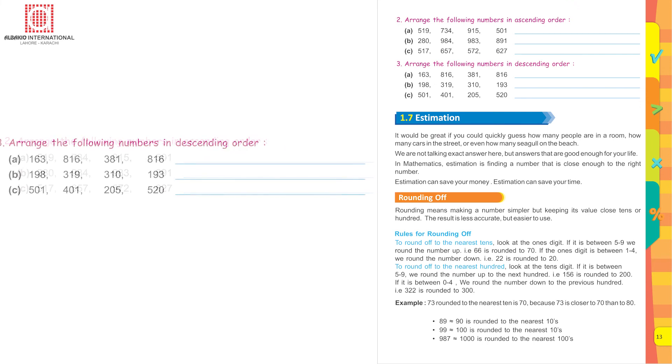Now arrange the following numbers in descending order. Descending means arranging the given numbers from greater to smaller number. 163, 816, 381, 816. Now look for the greatest number here. 816 is the greatest, then 381, then 163.